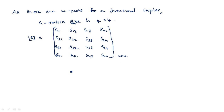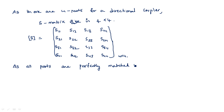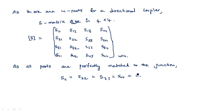Now let us see the properties of the directional coupler and the scattering matrix properties so that we can reduce the parameters. From the properties of the directional coupler, the ports are perfectly matched. So as all ports are perfectly matched to the junction, we can write S11 = S22 = S33 = S44 = 0. That means when power is incident from the first port, the reflection from the same port is 0, and similarly for ports 2, 3, and 4.